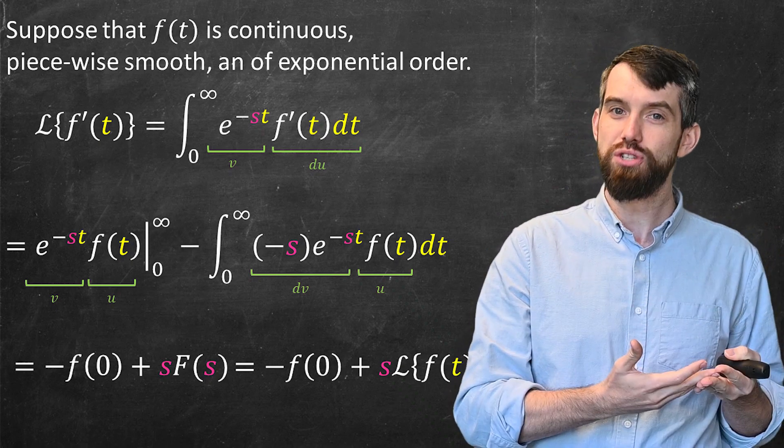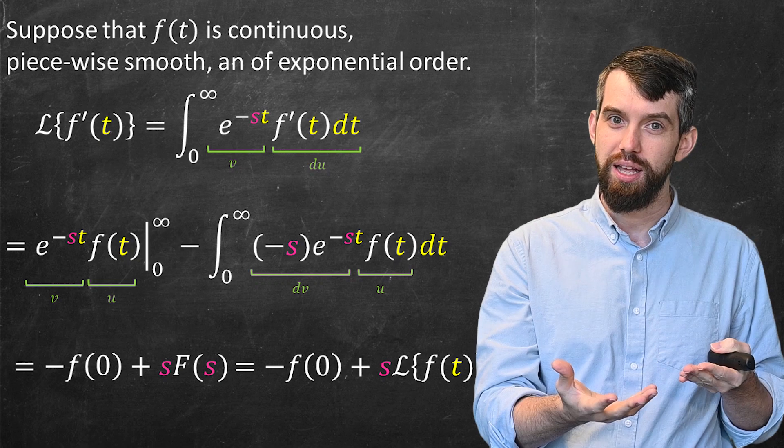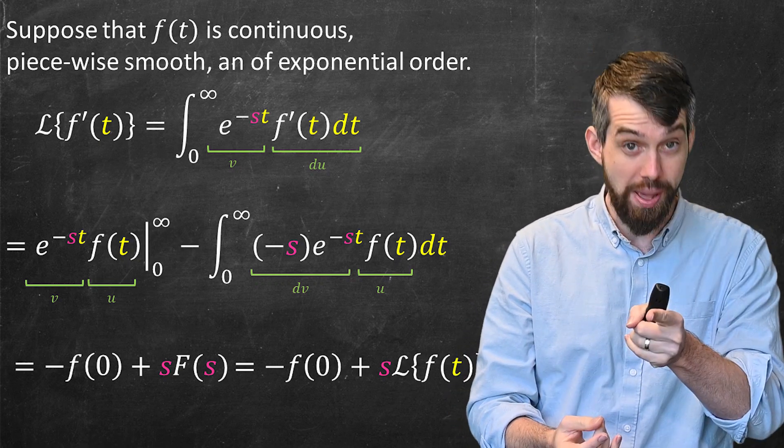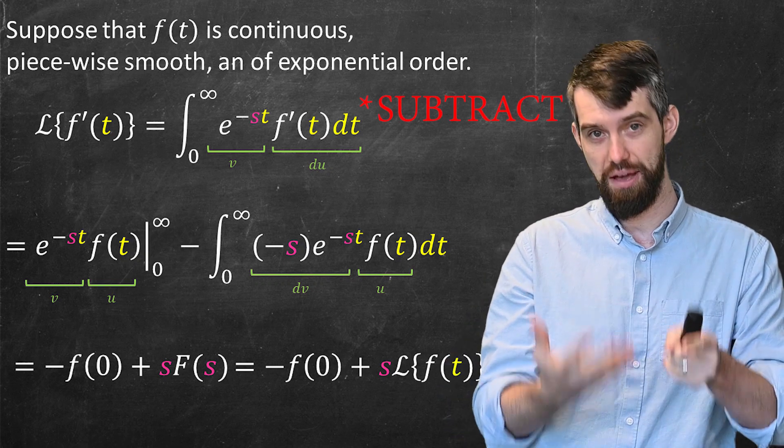So in other words, the Laplace transform of a derivative is just going to be the Laplace transform of the original function multiplied by s and then subtracting the constant f(0).